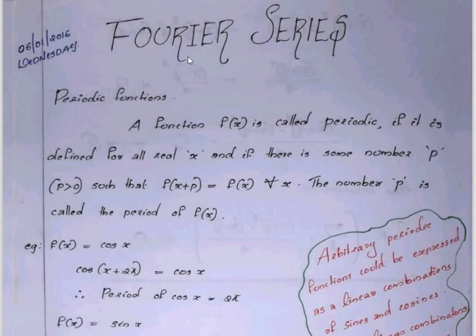Hi students. 4th semester B.S.E. Physics and Chemistry, Complimentary Mathematics, Module 1 is Fourier Series. We are going to talk about problems, 10 minutes, and we are going to do a test-type session.